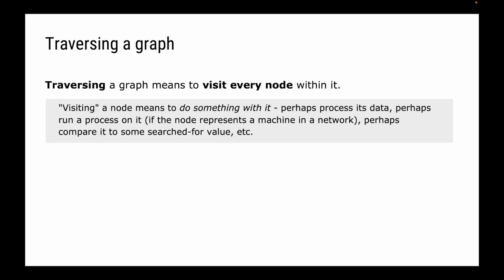Welcome to this video where I will be talking about graph traversal algorithms following the AQA A-level specification. When we talk about traversing a graph, we mean to visit every node within the graph. Visiting means to do something with it - that might be to process its data, run a process on it if each node were a machine or device in a network, or compare data within a node to a search value.